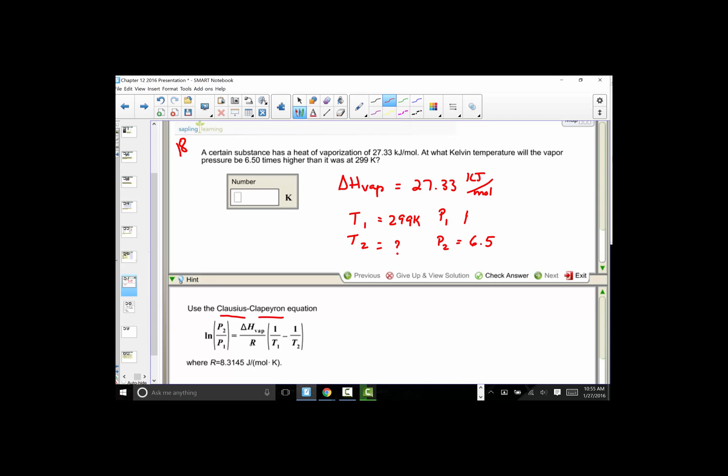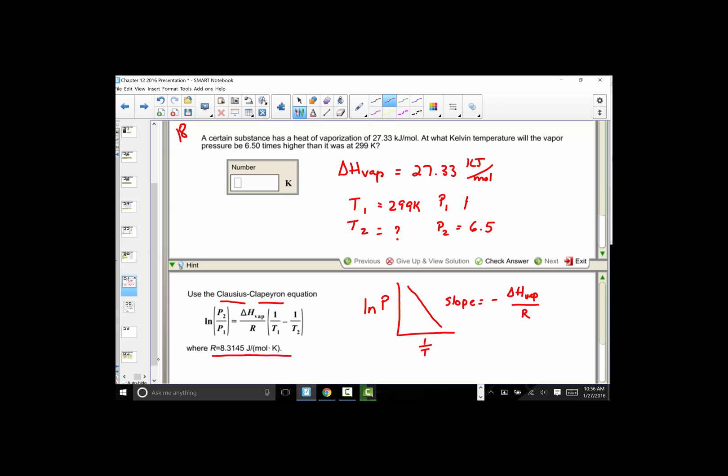We know that our Clausius-Clapeyron equation compares the natural log on a y-axis compared to the reciprocal of the Kelvin temperature, producing this negative slope where the slope of the line is represented as negative delta H of vaporization over the gas constant R, where R is 8.31 joules per mole Kelvin. The slope is negative because this value is always positive.